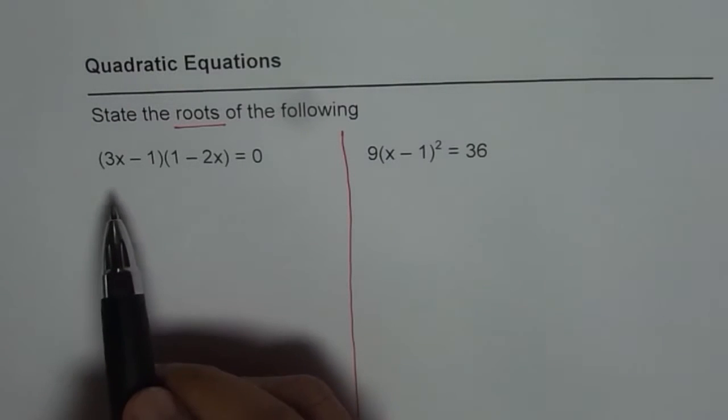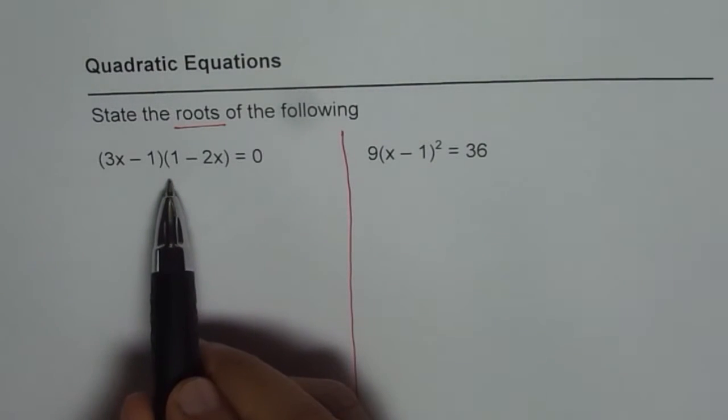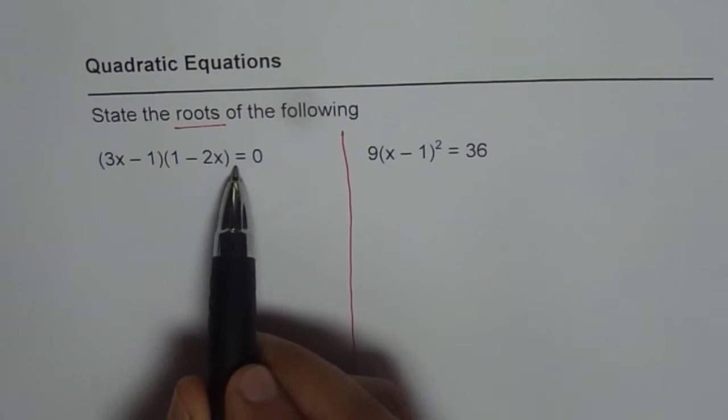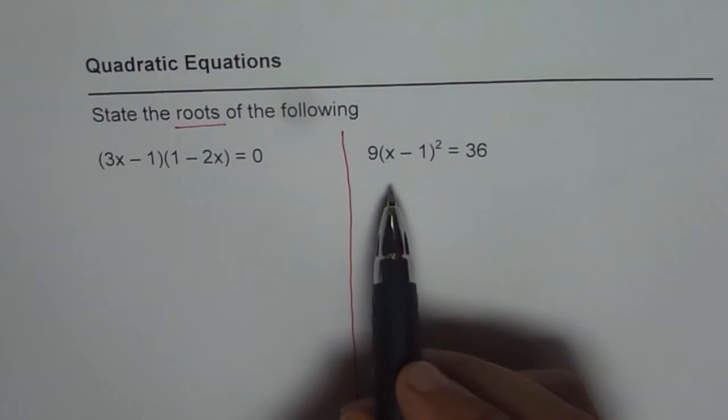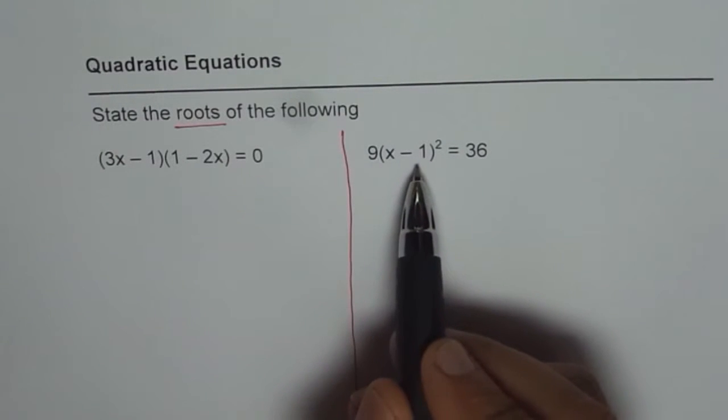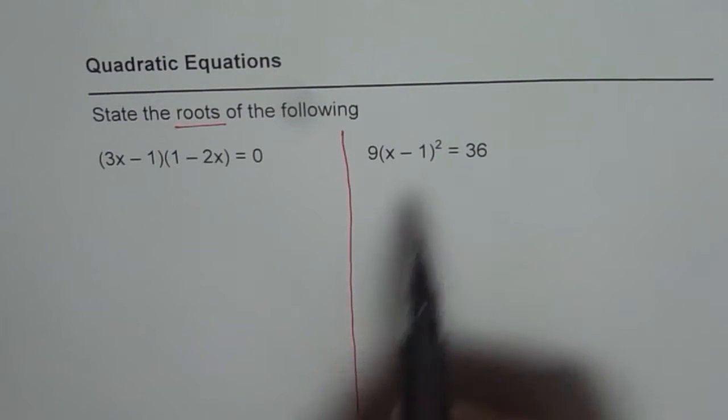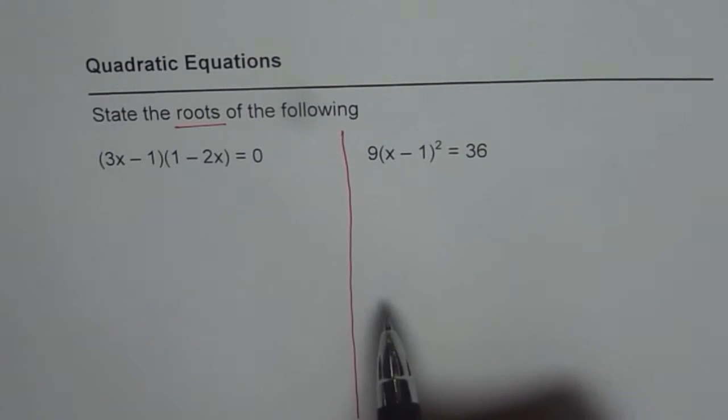The first equation is 3x minus 1 times 1 minus 2x equals 0. The second one is 9 times x minus 1 whole square equals 36. Let us solve them one by one.